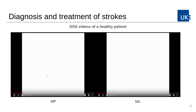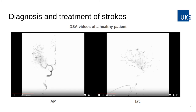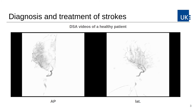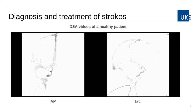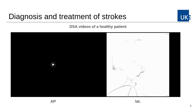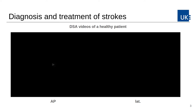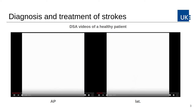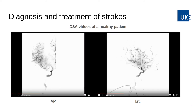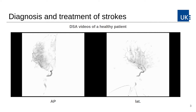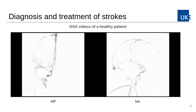A digital subtraction angiography is usually acquired from a frontal and lateral view. These example videos show a healthy patient where there is no occlusion — on the left is the frontal view, on the right the lateral. Apart from individual manifestations, all the arteries shown should be perfused.